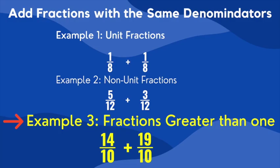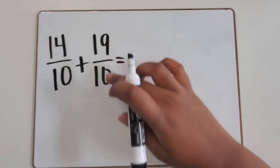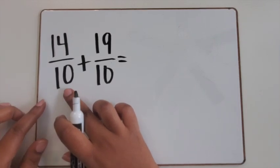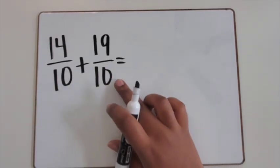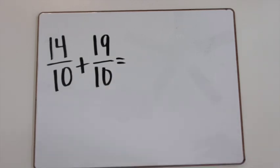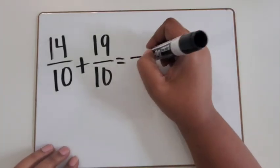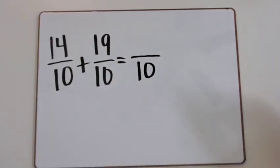Let's look at one more example where we're using two fractions that are greater than one to add together. In this example, we have 14 tenths plus 19 tenths. What are the denominators? In the first fraction, the denominator is tenths. In the second fraction, the denominator is also tenths. You can add these two fractions together because they have the same denominator, and whatever our sum is going to be, we know our denominator will still be in tenths.